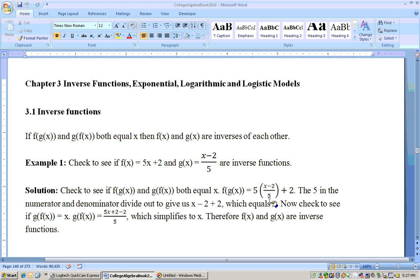If we get x, then we're halfway there. In simplifying this, I've got 5 over 5, and what happens to these 5s? They divide out to 1, and I'm left with x minus 2 plus 2. Minus 2 plus 2 is 0, so I'm just left with x.